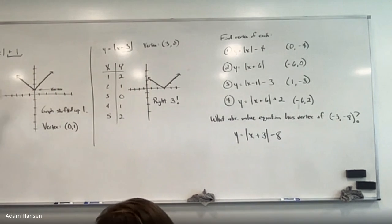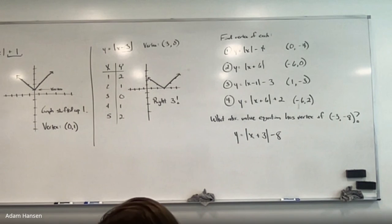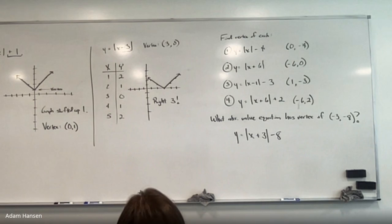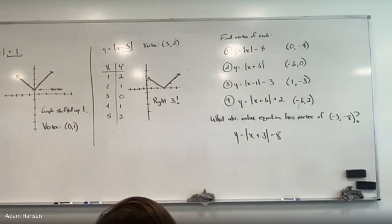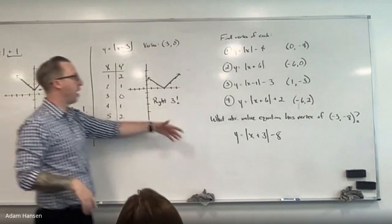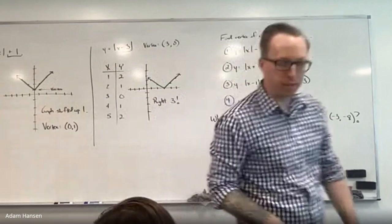A couple of takeaways from today: What shape does the graph of the absolute value function have? V. It's got to change direction. What do you name the point where it changes direction? Vertex. That vertex is either on top or bottom. We talked about how to find the vertex in a bunch of different ways: looking at the table, looking at the graph, and looking at the equation.